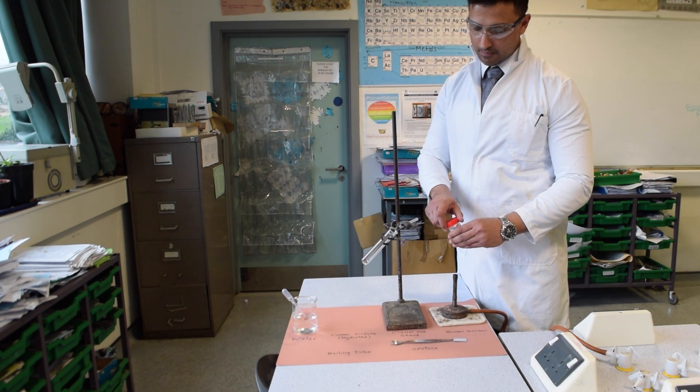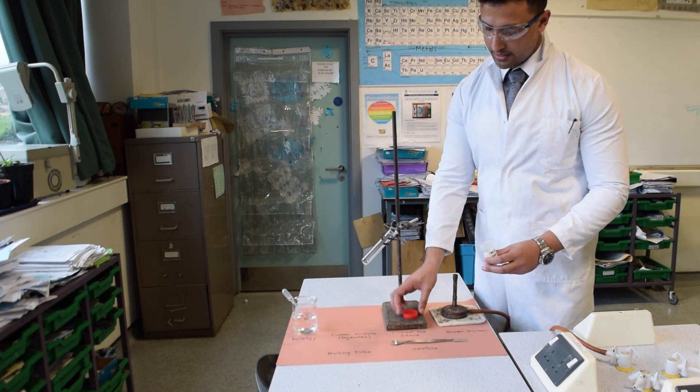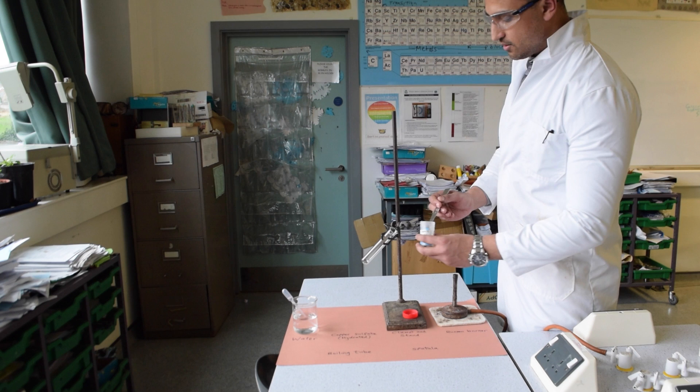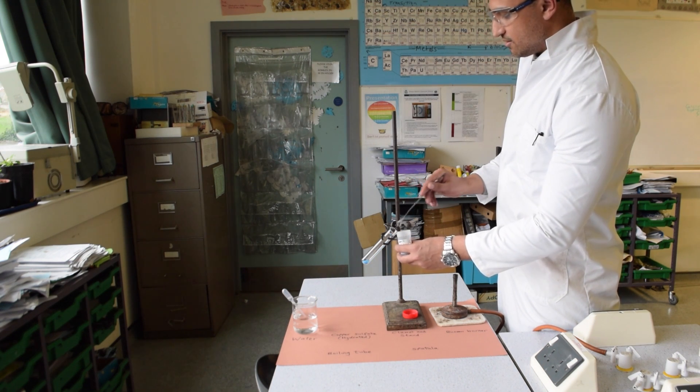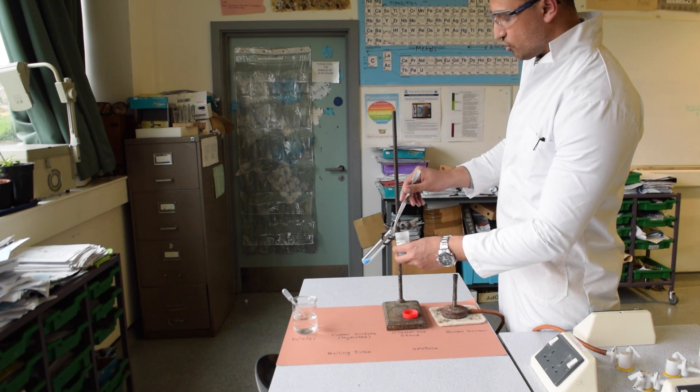Once you've attached your boiling tube, take your copper sulfate and use your spatula to fill in carefully. Add two spatula fulls of copper sulfate. Be careful not to drop it.